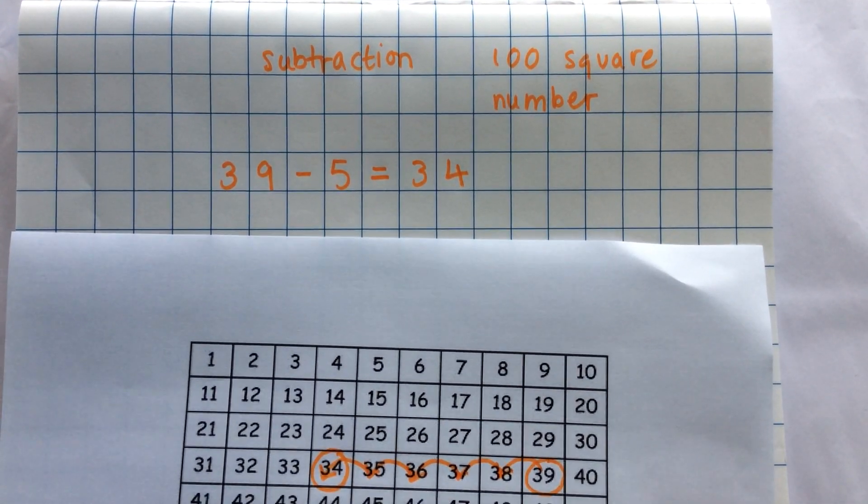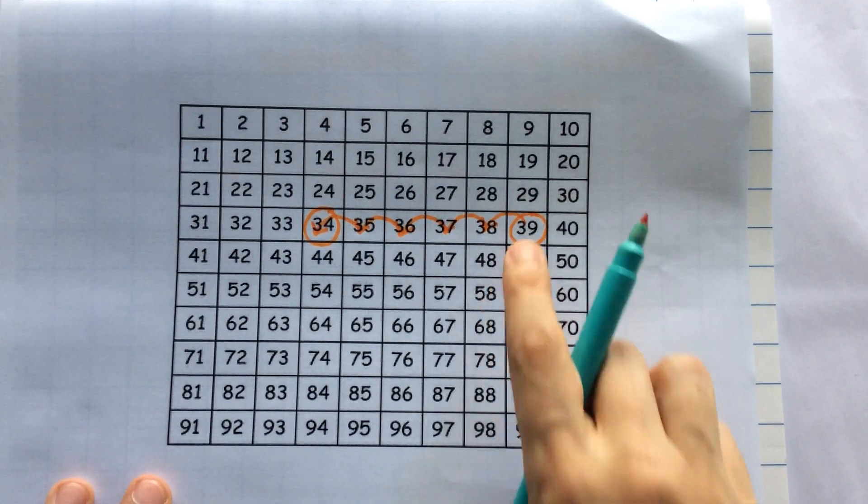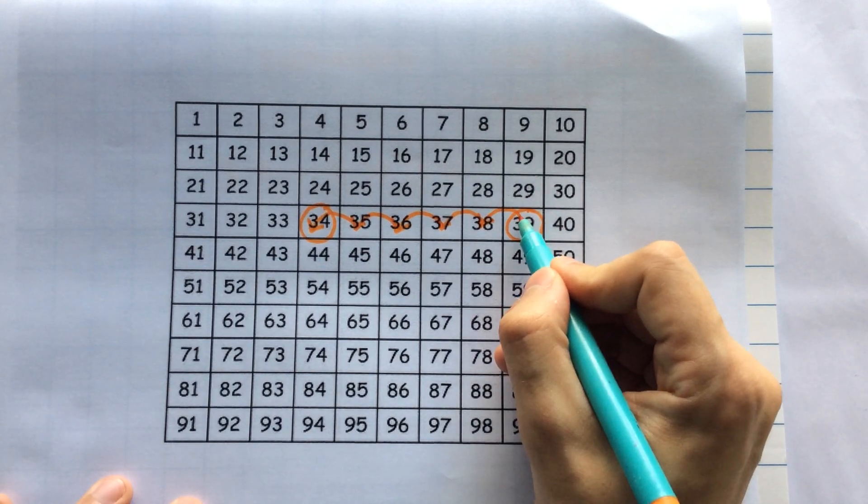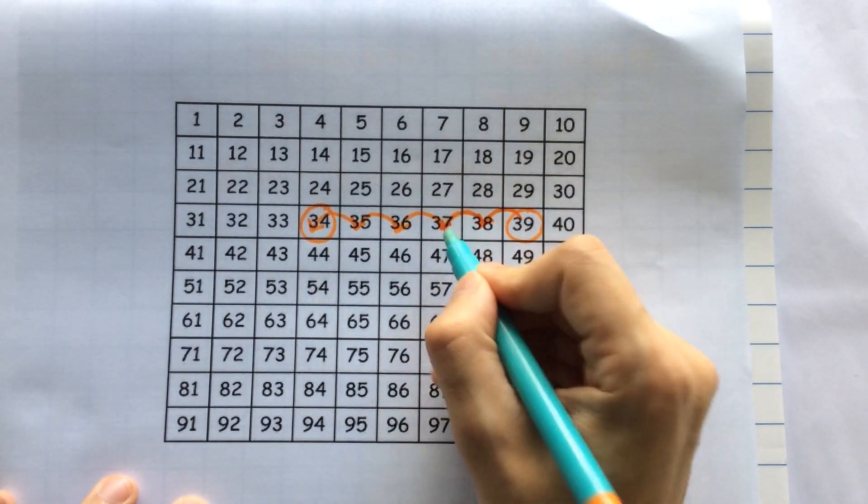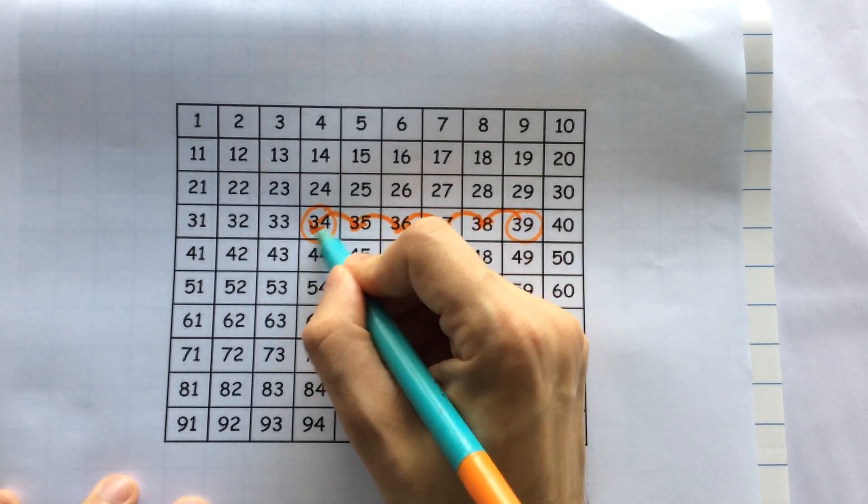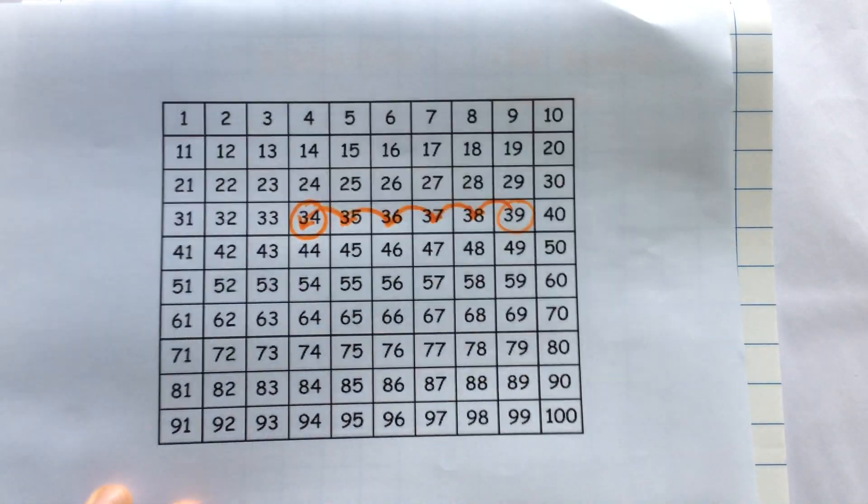I'm going to show you that one more time. I start at 39 and circle it. I then jump back 5 times. 1, 2, 3, 4, 5 and I circle my answer.